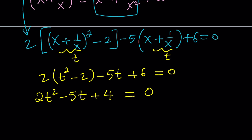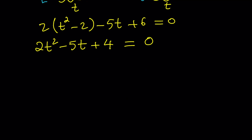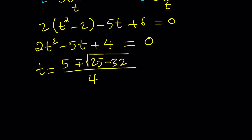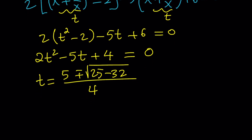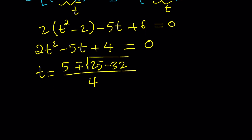Solve this quadratic using the quadratic formula: t equals negative b plus or minus the square root of b squared — which is 25 — minus 4ac, which is 4 times 4 times 2, equaling 32, divided by 4. This gives a negative discriminant, meaning the solutions are complex. We get a negative 7 under the radical, so t equals 5 plus or minus the square root of 7i, divided by 4.